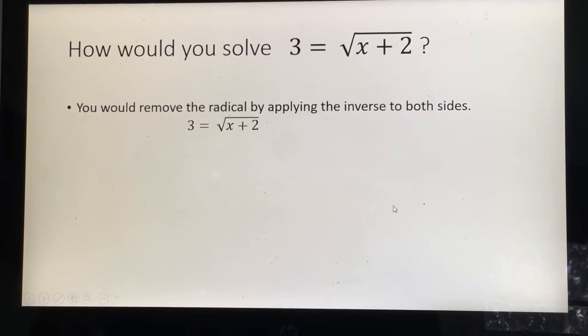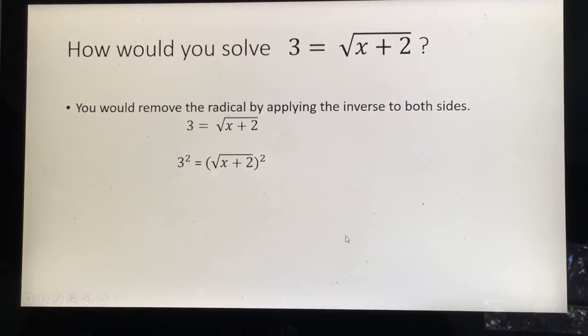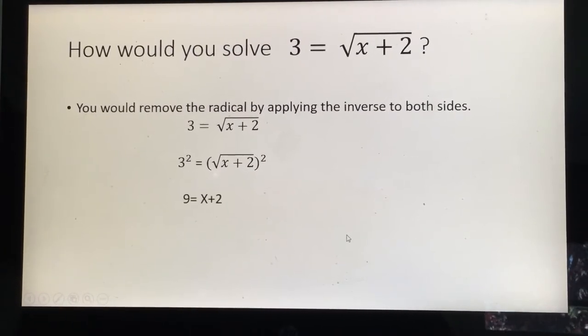First, how would you solve 3 equals the square root of x plus 2? Well, you'd have to apply the inverse. What's the inverse of square root? You square both sides. Now you just have 9 equals x plus 2, x equals 7.